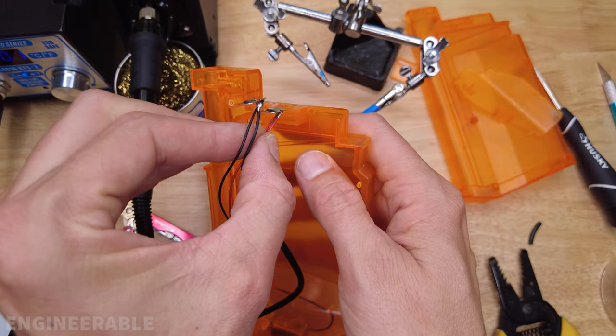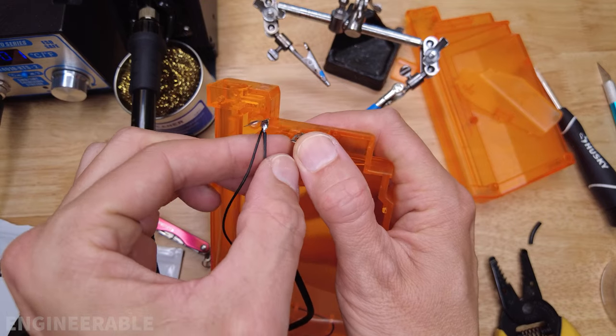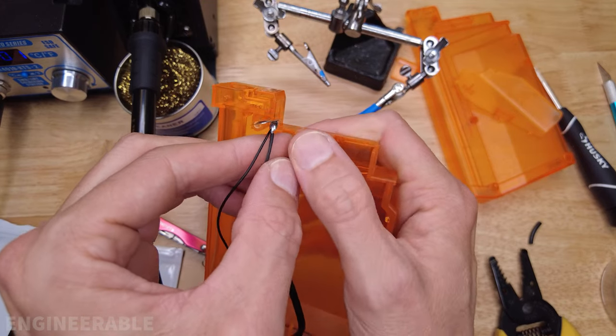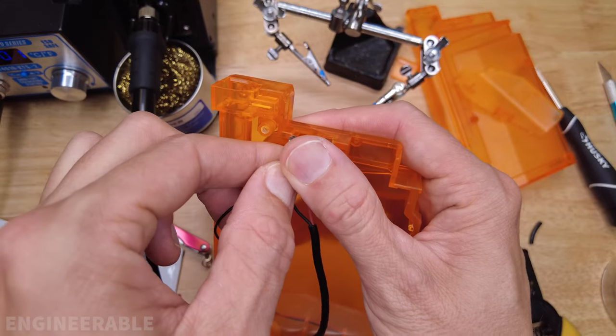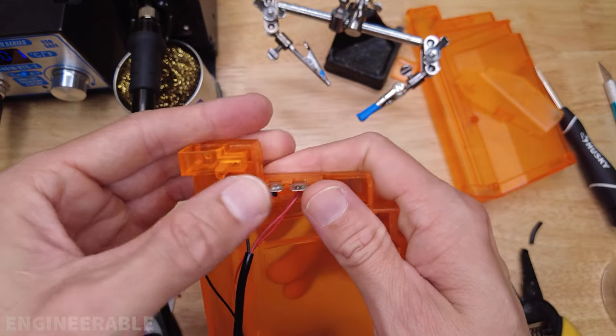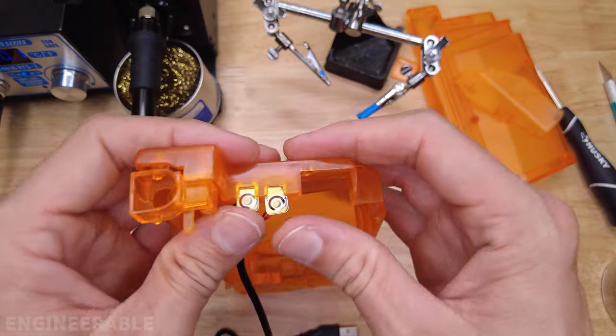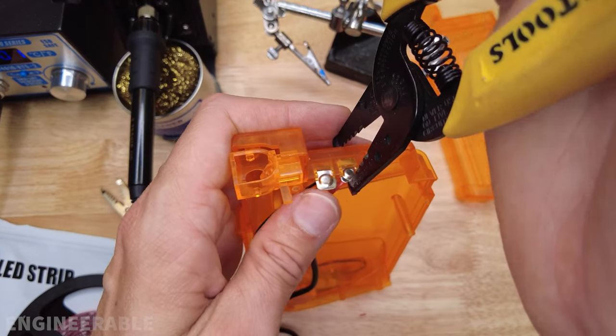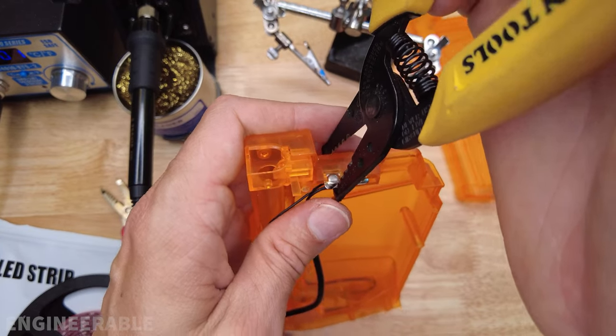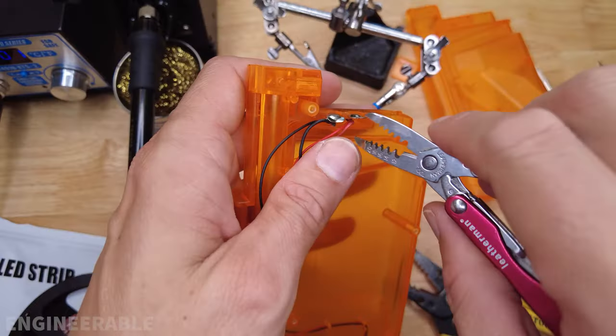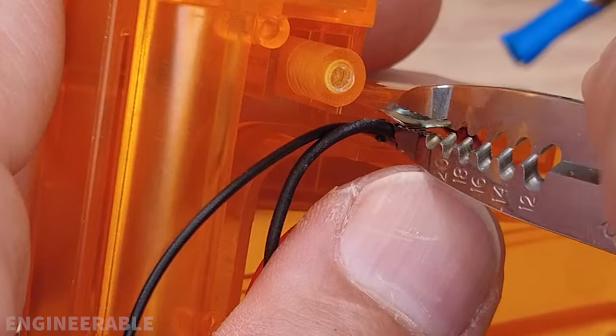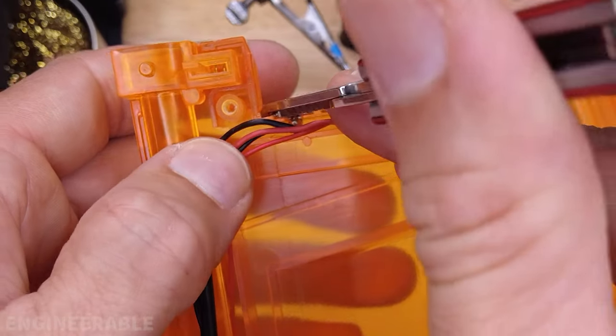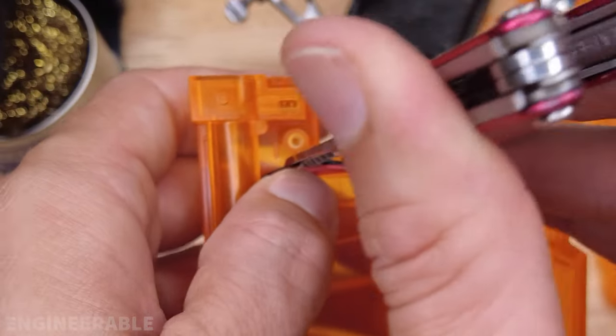I got to put the contacts back in the right place. So the red wire was on the right side. I'm trying not to put too much force in it and bend it. Okay, the wires have to be routed in this channel over here in this direction.